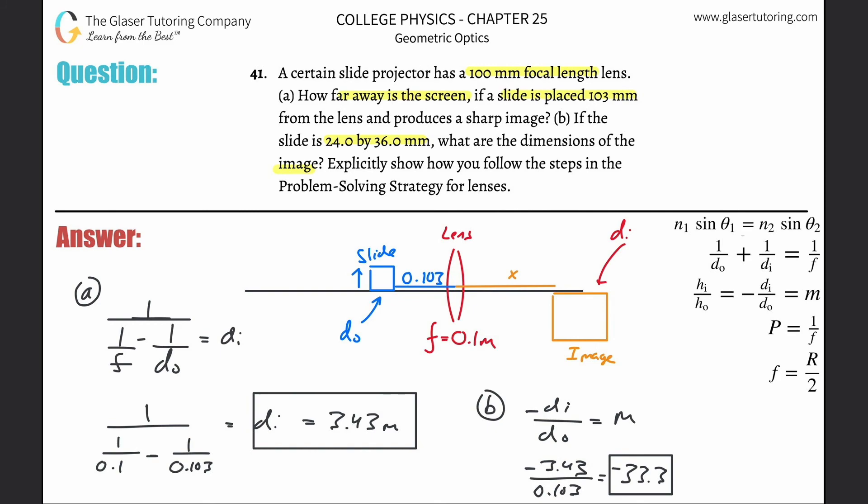The magnitude tells us it's going to be blown up, and the negative sign tells us it will be inverted. If this was 0.024 meters upward, then the image height should be...